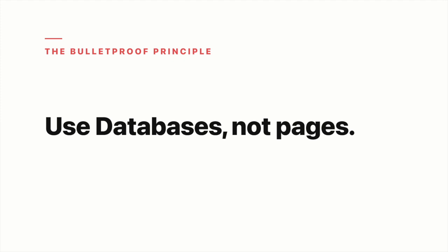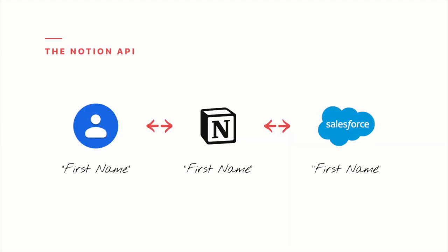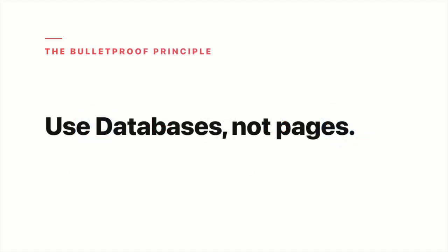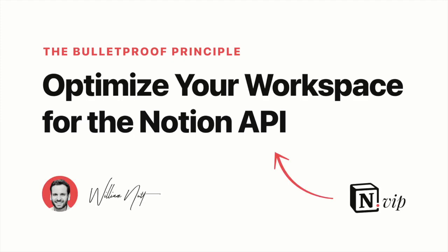You'll notice a constant in all of the integration examples we discuss, and that is databases. Integrations almost always match a property of a Notion database to a value in another app — for example, the first name of a person in your contacts database with the first name of a contact in Salesforce. Therefore, if you uphold this database-centric strategy, you'll position your workspace to leverage all of the current and future integrations. You can dive deeper into this concept in my post dedicated to optimizing your workspace for the API, linked in the video description.